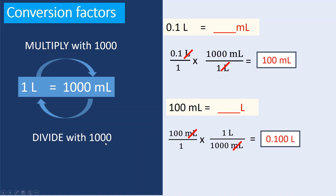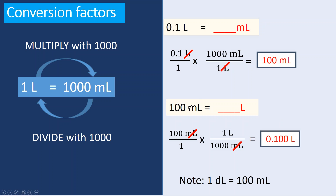Another way is to simply divide milliliters by 1000 to get liters. You can also move the decimal point three digits to the left side — one, two, three digits from the decimal point — which gives you 0.1 liters, which equals 100 milliliters. Note: one deciliter equals 100 milliliters.